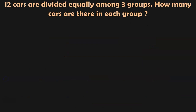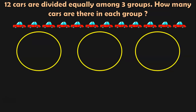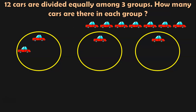12 cars are divided equally among 3 groups. How many cars are there in each group? Here we have 12 cars. Let us take these yellow circles as groups. There are 3 groups. We have to divide these 12 cars equally among 3 groups. Take the first car and put it in the first group. Take the second car and put it in the second group. Take the third car and put it in the third group. Next, move on to the next car — put one in the first group, take the next car and put it in the second group, take the next car and put it in the third group. Repeat the same process.